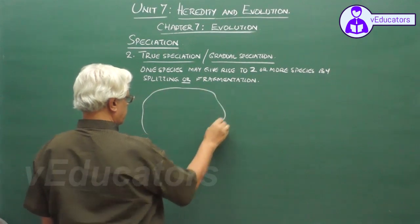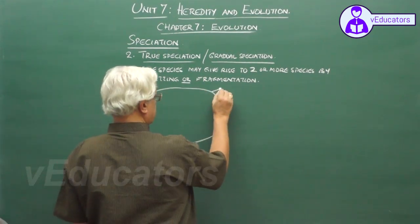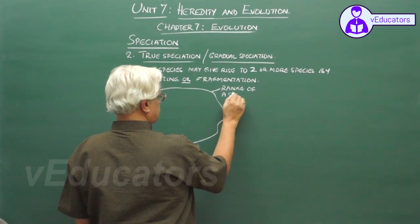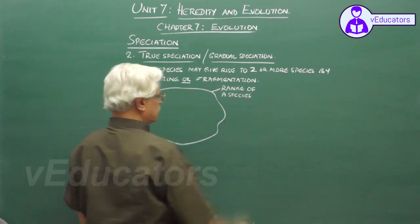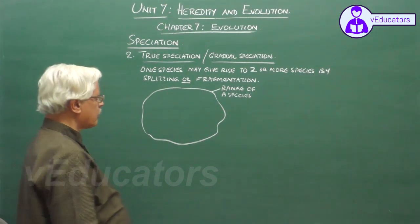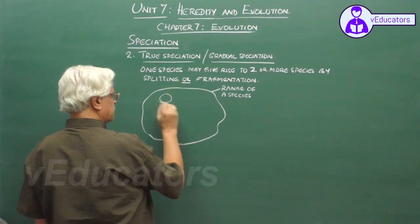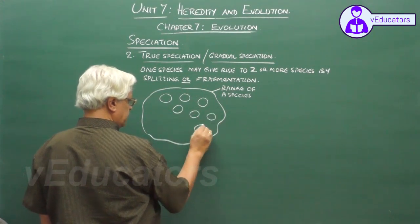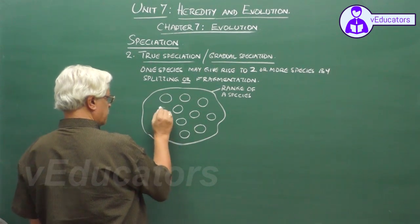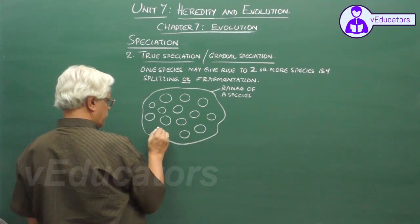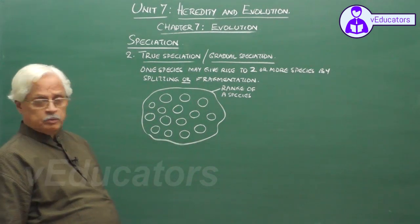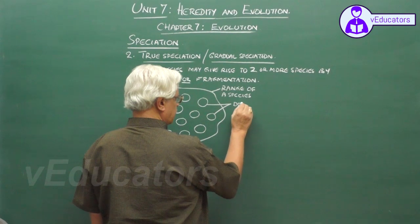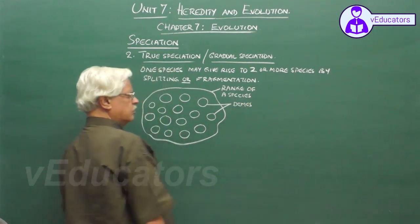Suppose this is the geographical range of a species. In this geographical range, members of a species are randomly distributed forming small pockets of population.